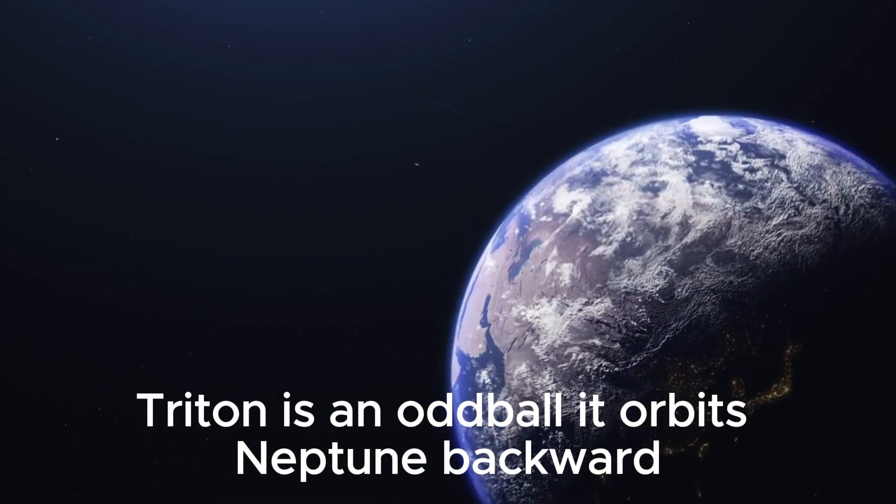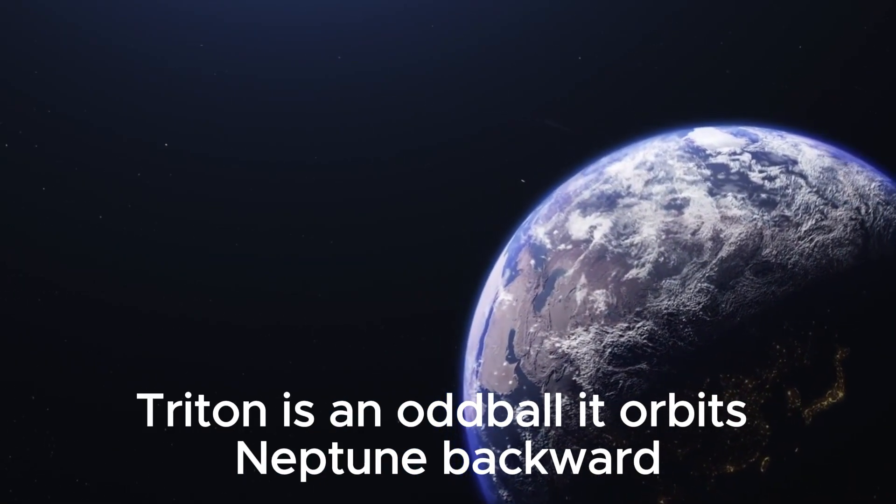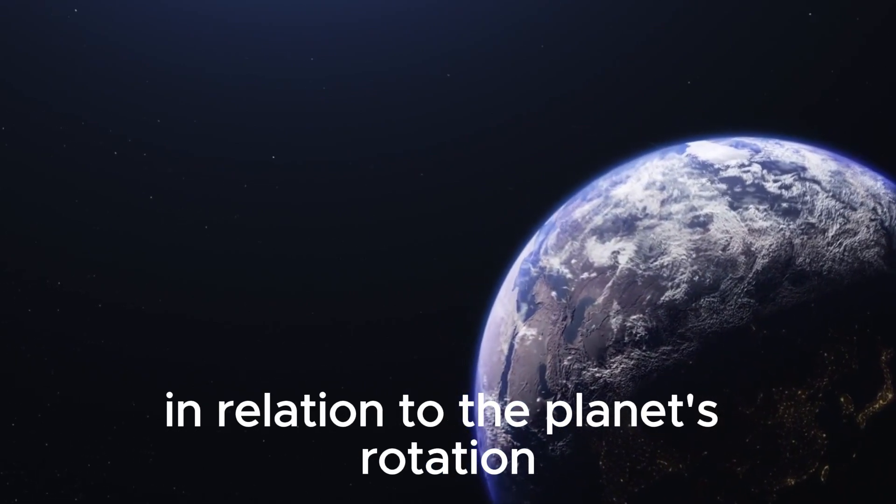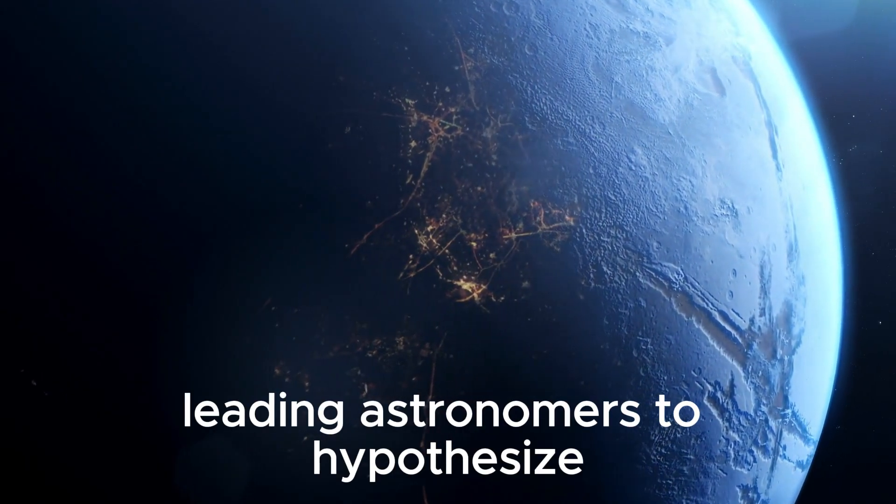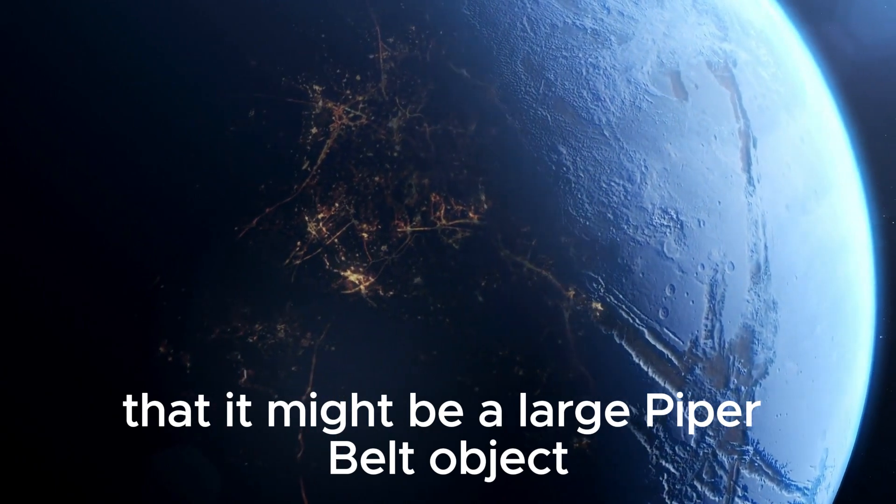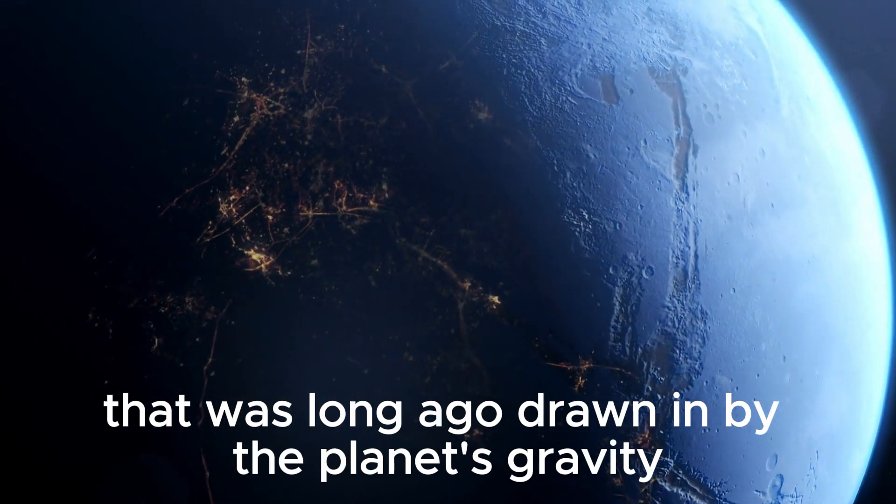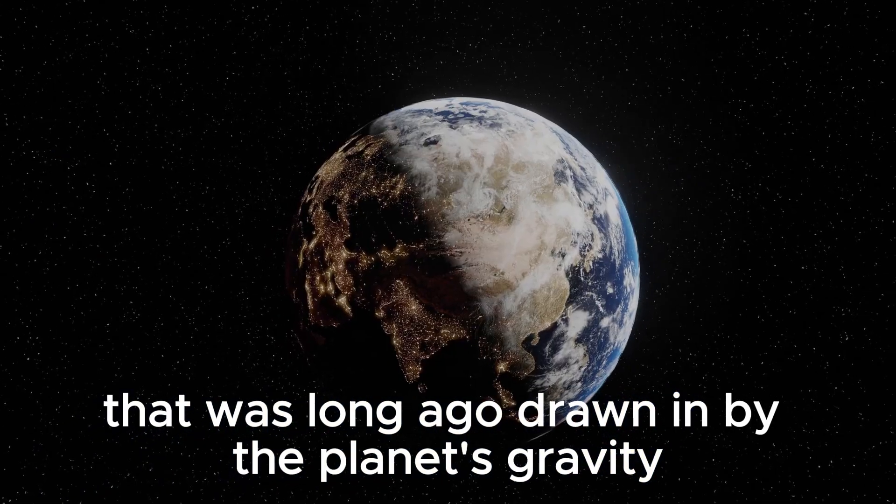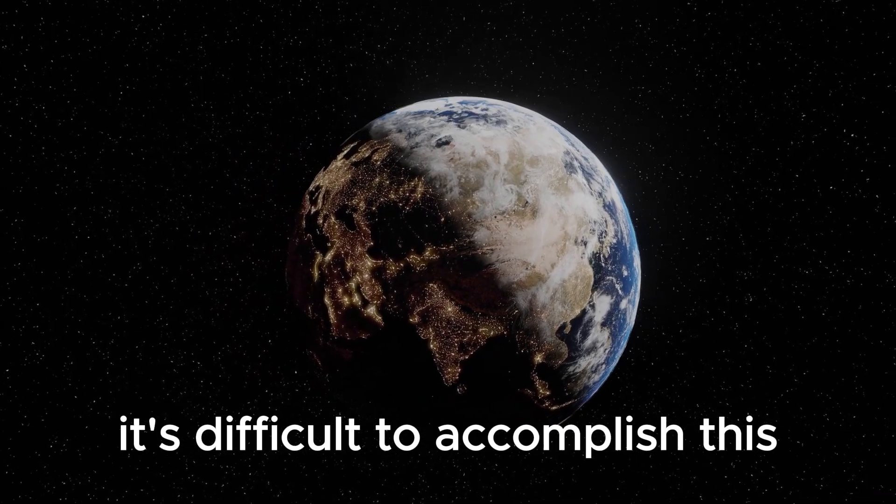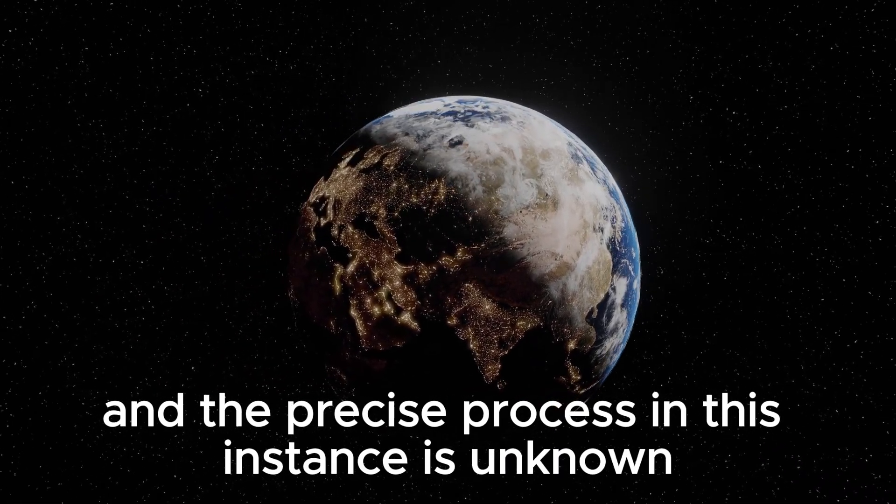This obvious Triton is an oddball. It orbits Neptune backward in relation to the planet's rotation, leading astronomers to hypothesize that it might be a large Kuiper belt object that was long ago drawn in by the planet's gravity. It's difficult to accomplish this, and the precise process in this instance is unknown.